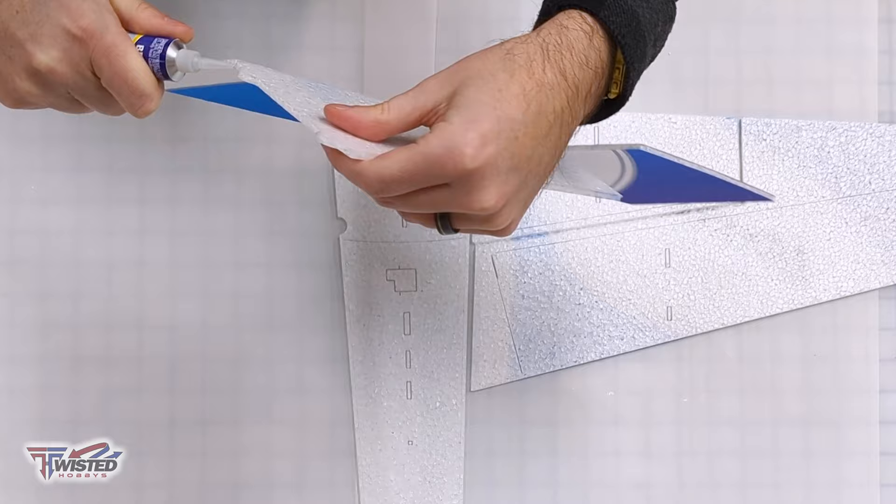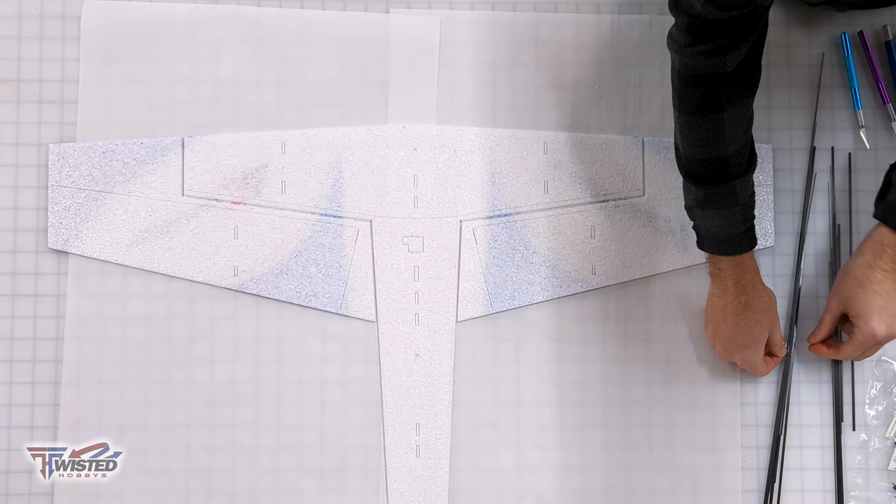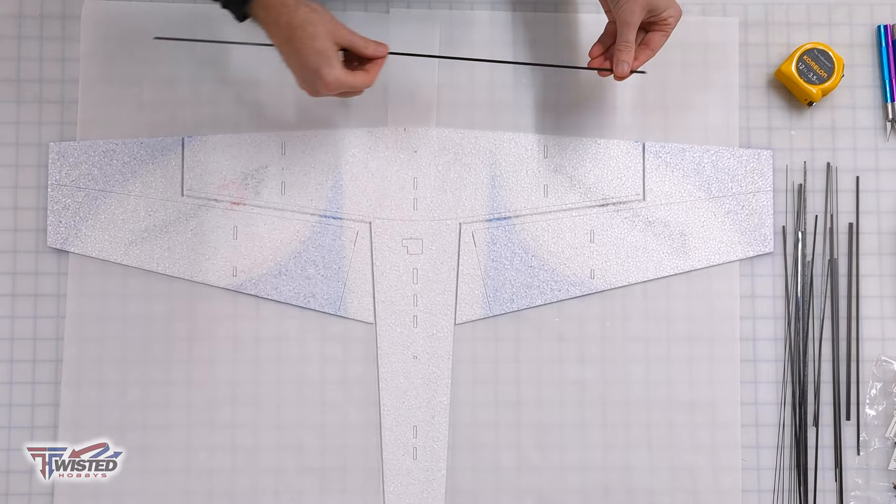Now we're gonna glue the wings on and you'll notice I got out my parchment paper. When I glue these together I put the glue on, touch them together, pull it apart for about a minute, and then push it all the way together for a permanent fix.